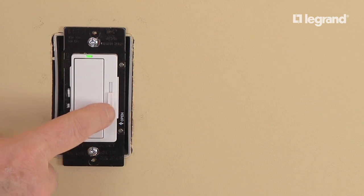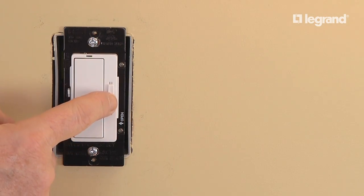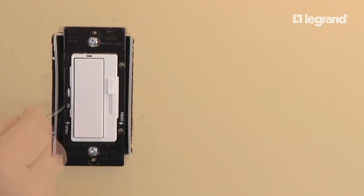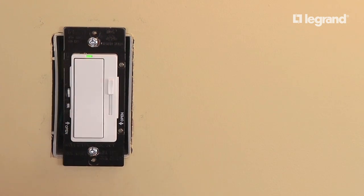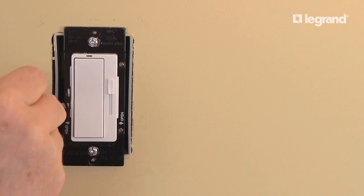First, turn on the dimmer and move the slider to the maximum brightness level. Now, hold the calibration button for approximately 5 seconds until the locator LED at the top of the dimmer starts to flash. Be sure that you do not release the calibration button until the LED starts to flash.